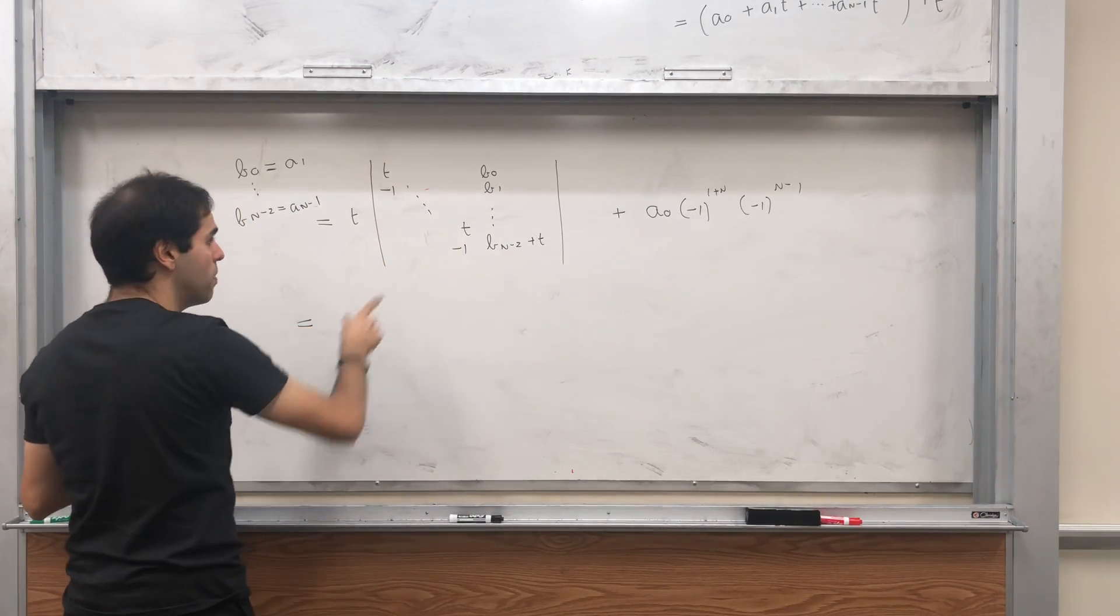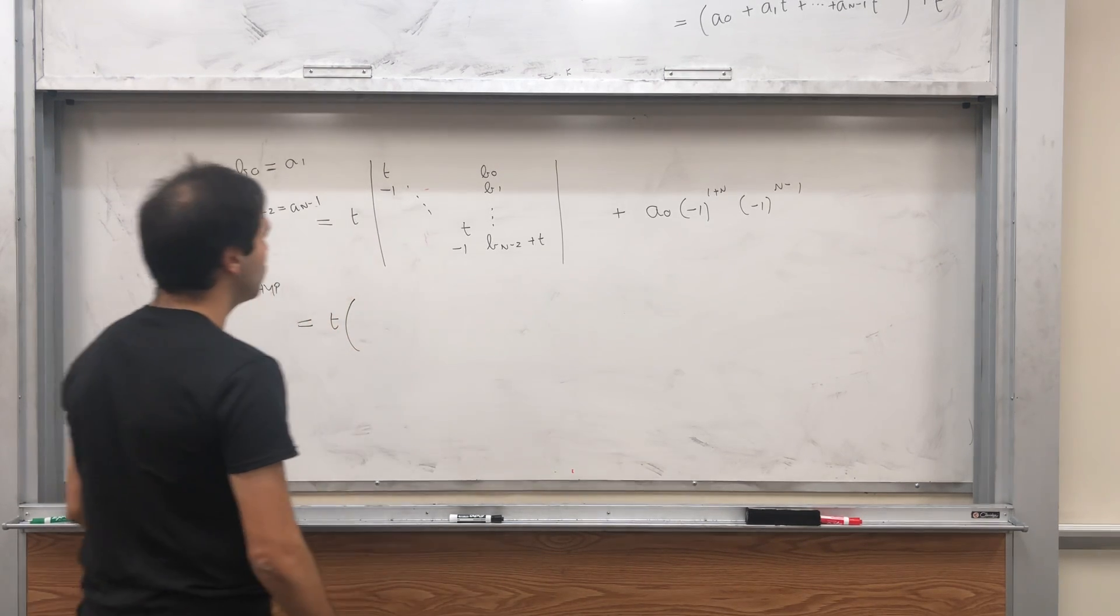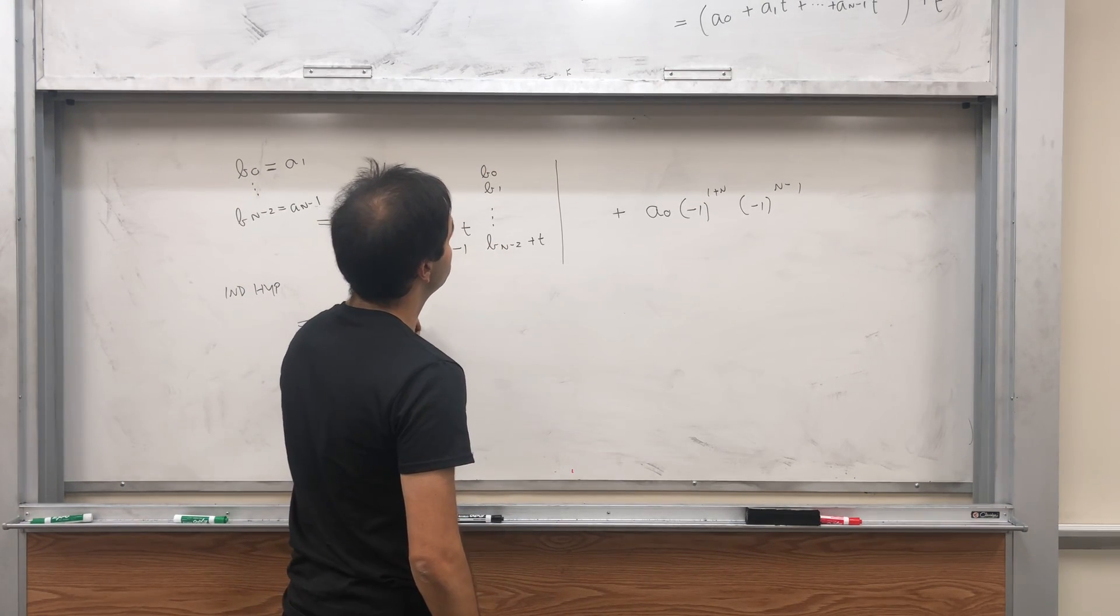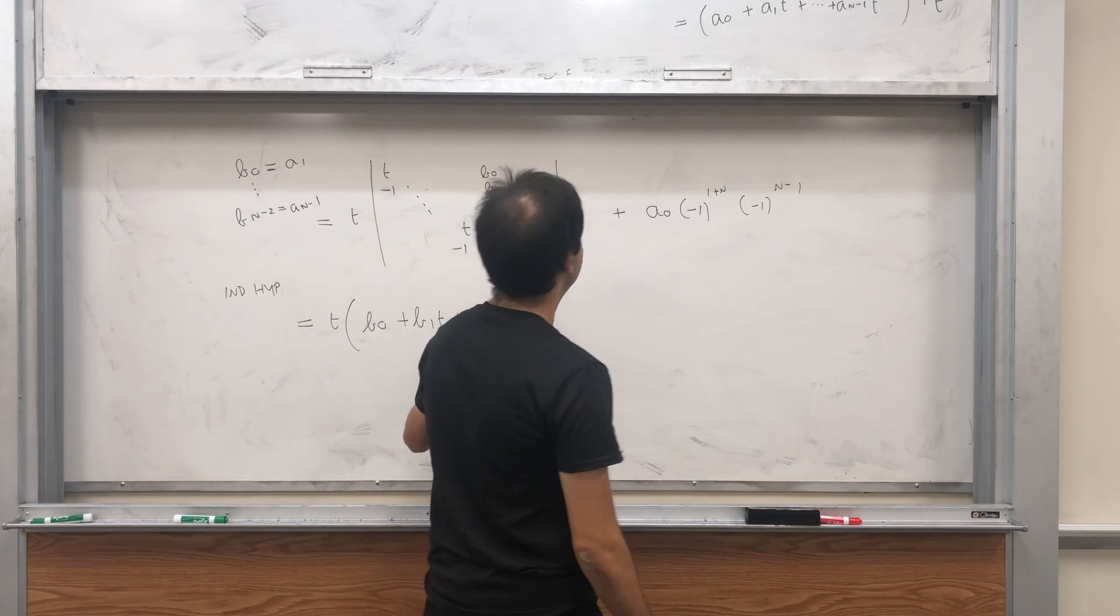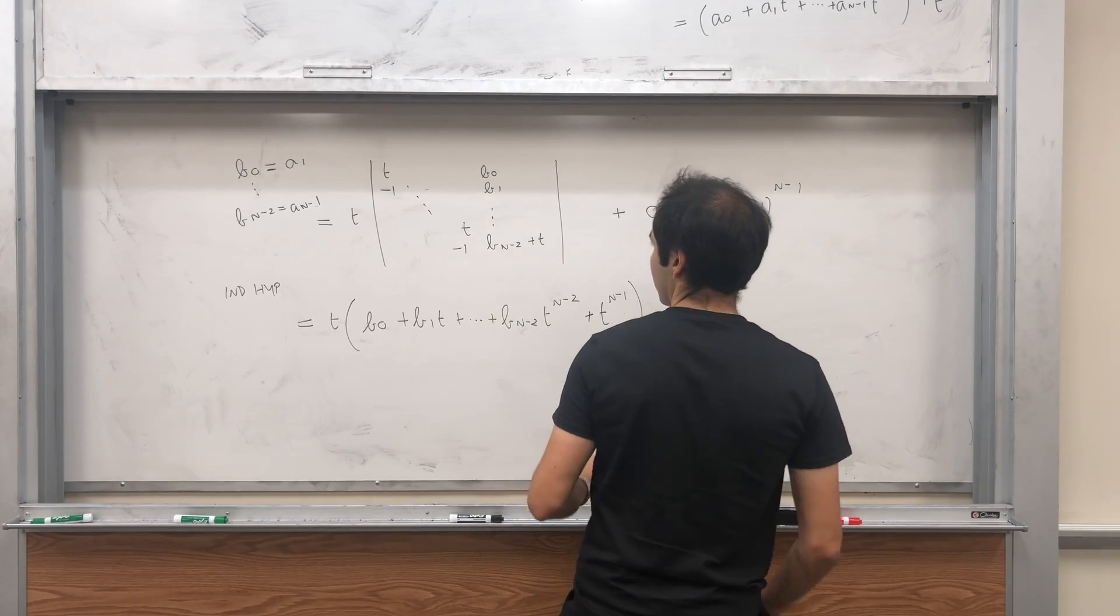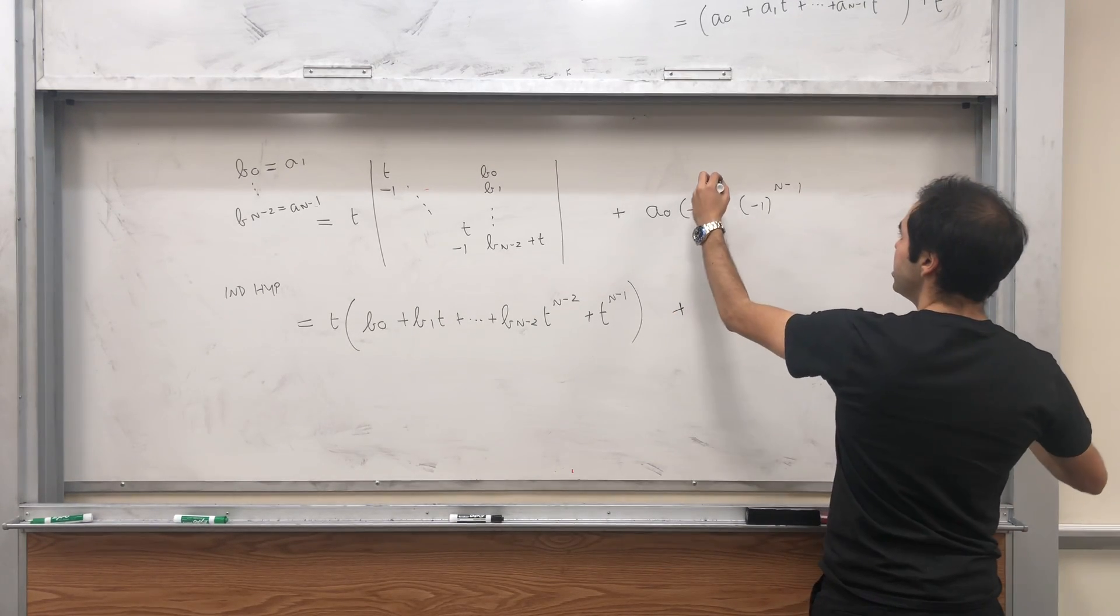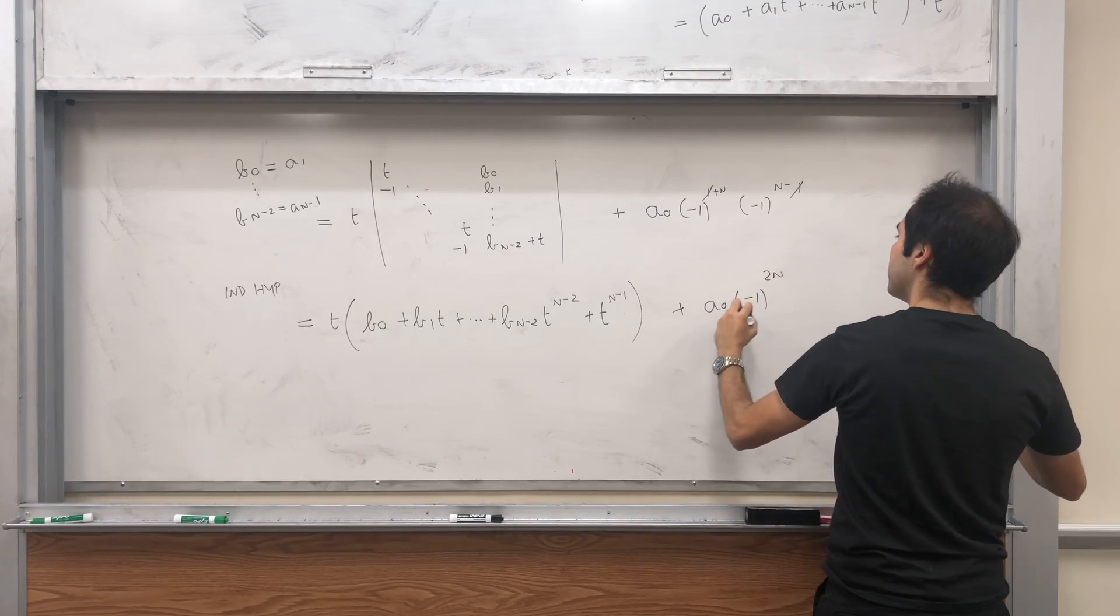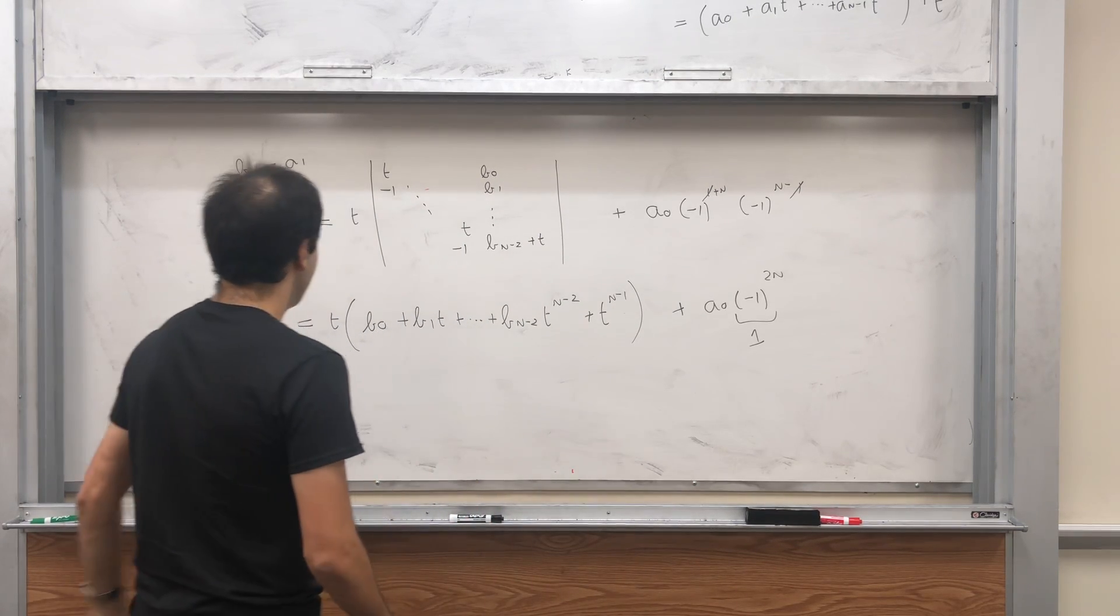So all right, now we are ready to apply the induction hypothesis, and we get: what is this determinant? Well it's simply the same thing above, but with B_0s: B_0 plus B_1*t plus dot dot dot plus B_{n-2}*T^{n-2} plus T^{n-1}. So that's the induction hypothesis, but with n minus 1. And what about here? Well the 1s cancel out, and we get A_0 times minus 1 to the 2n, this one being 1.